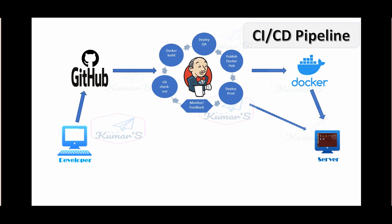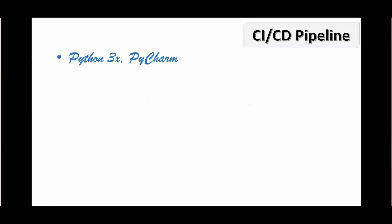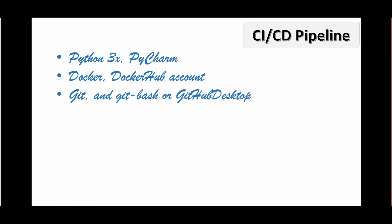For doing this, we will need several software components. First is Python 3.x, and PyCharm IDE for writing the code. Next is Docker running on my Windows machine. You will also need a Docker Hub account to push images to the Docker Hub registry. We need Git and Git Bash or GitHub Desktop on our Windows machine for pushing code to GitHub. You will also need a GitHub account — it's free, so go ahead and create one if you don't have one.